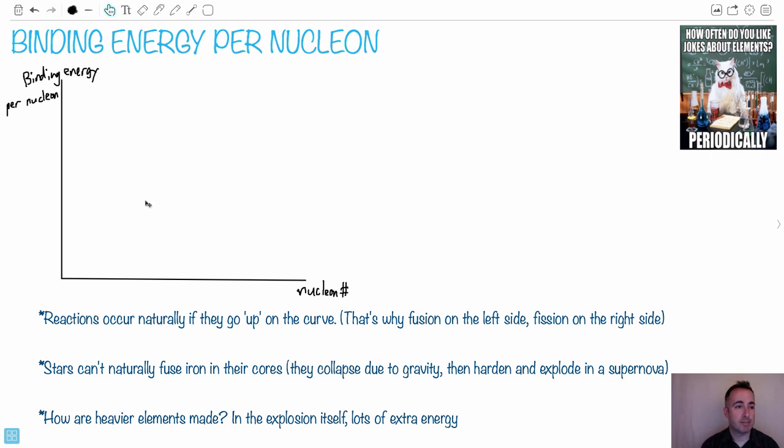So let's talk about this binding energy per nucleon. Remember the binding energy, it's the energy released when an atom is made from its constituent parts, which means when you make a new atom, this energy is the energy that's released. That's the binding energy. Now, of course, a larger atom has larger binding energy.